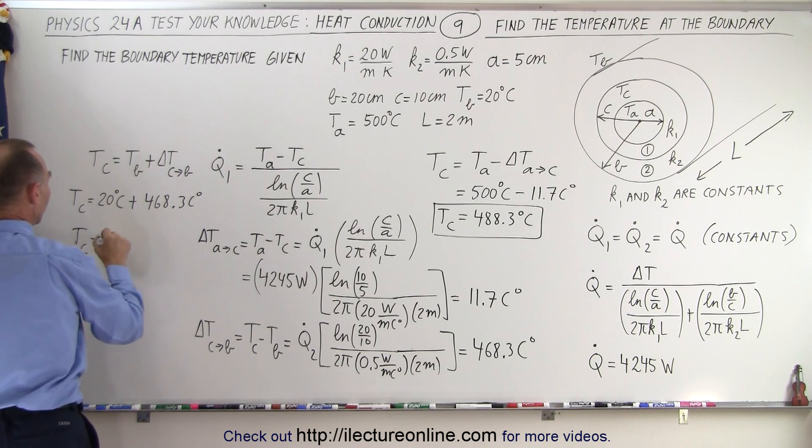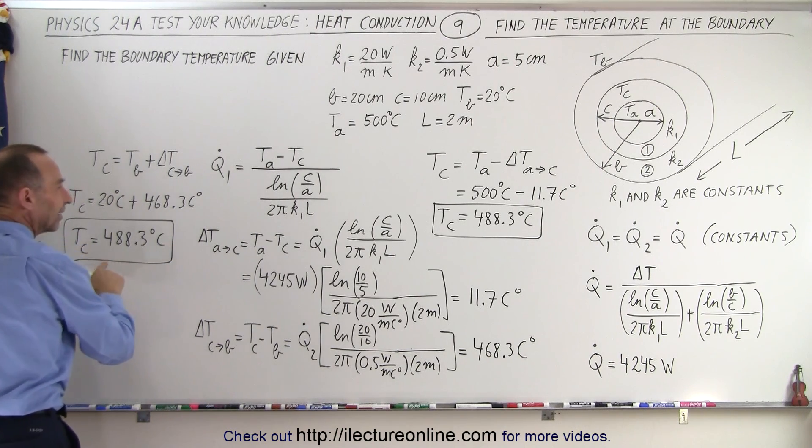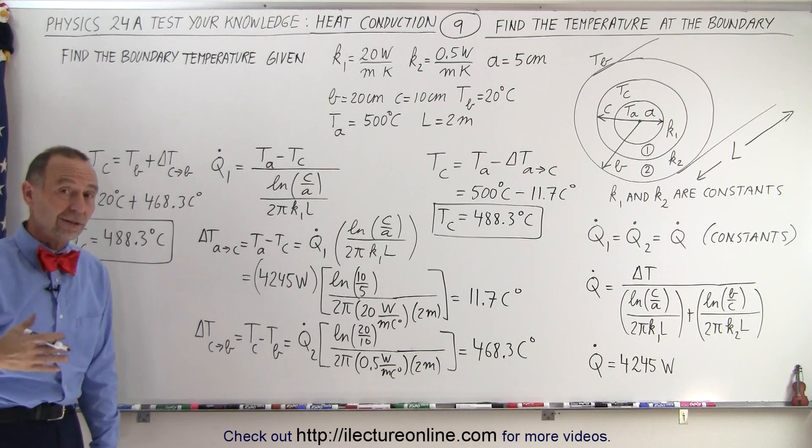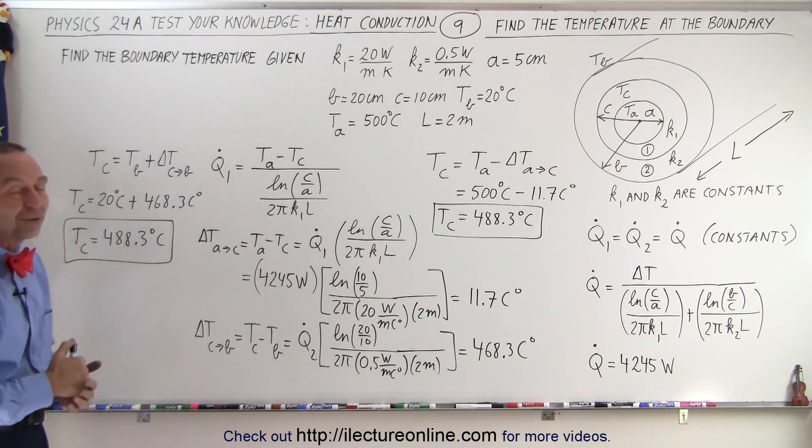And so T at C is equal to 488.3 degrees centigrade. And notice we get the exact same result, which gives us comfort that we probably did it correctly. And that is how it's done.